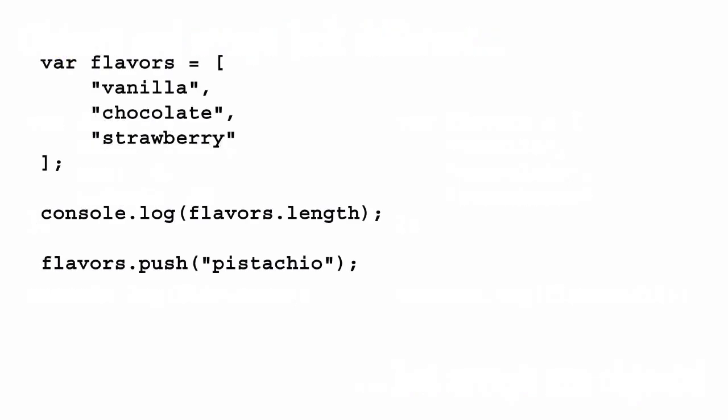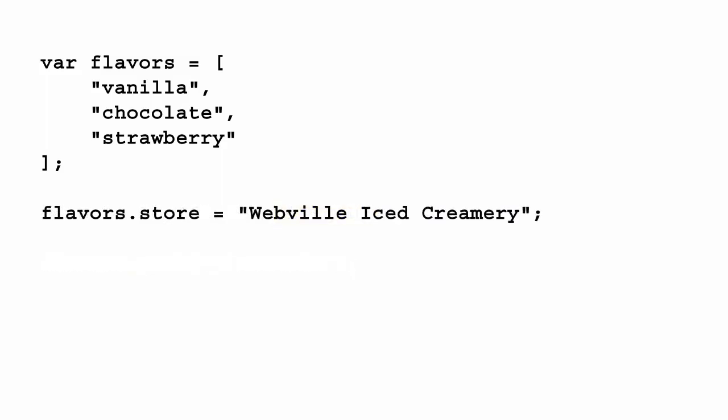Because an array is an object, an array has properties and methods. You see these when you use properties like length to get the length of an array, or when you use push to add a new value to an array. You can even add your own properties if you want.